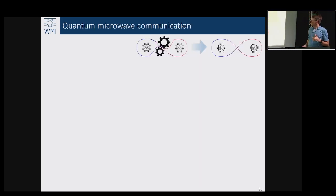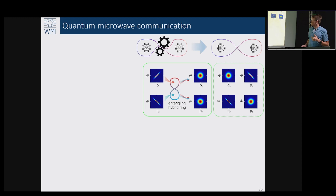Then you can do lots of interesting things. For example, you can show that if you take two JPAs and make them squeeze orthogonal quadratures - let's say magnetic field and electrical field - and then combine them with a microwave symmetric beam splitter, you obtain a very interesting result.